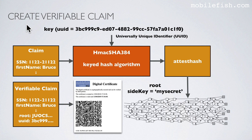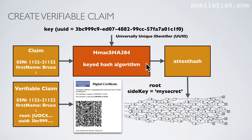I will now explain how the verifiable claim is created. Gotham City first creates the claim: from different sources, information is gathered and put into one data package, for instance the social security number, Bruce's first name, etc. This claim represents a data package and all data can be stringed together. The HMAC SHA-384 key hash algorithm requires a unique key and a data package as input — the UUID serves as the key — and outputs an attest hash. Gotham City stores this attest hash on the tangle using the root and the side key, then creates a verifiable claim by adding the root and the UUID into it. This data package is converted into a QR code and handed over to Bruce.